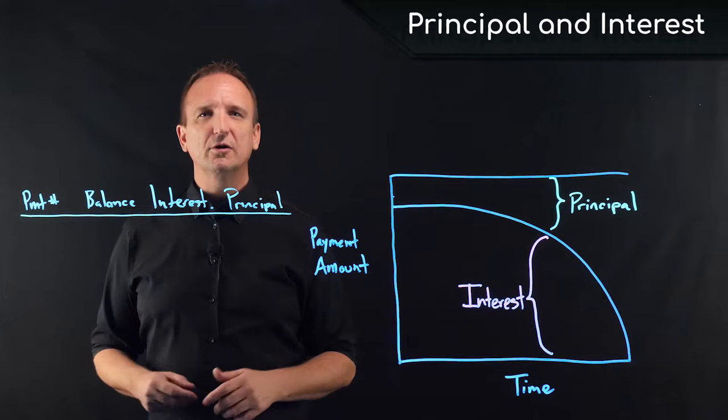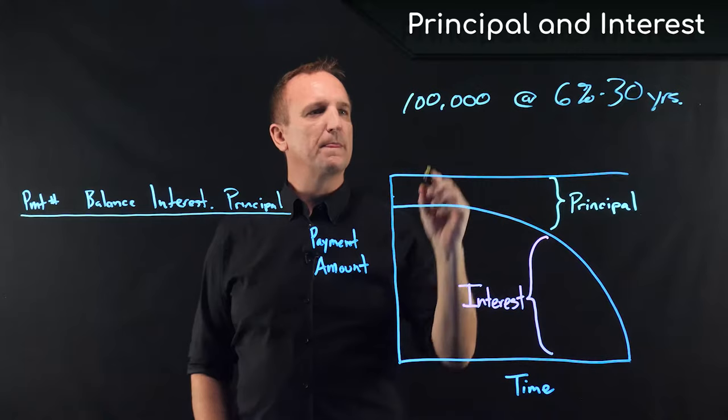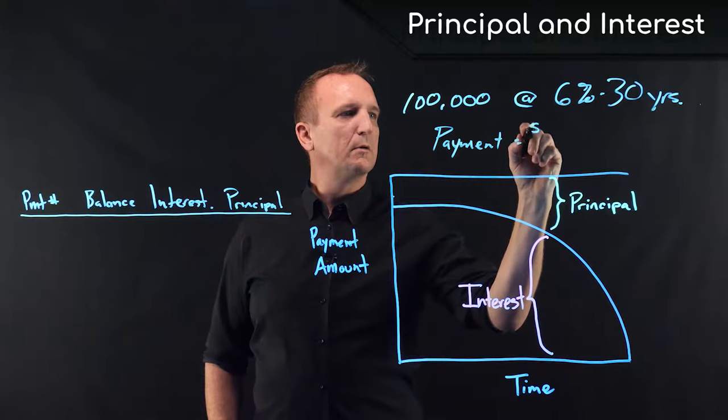Let's take a look at an example. Let's say we have a $100,000 loan at 6% amortized over 30 years. Our payment amount is going to be $599.55 each month.